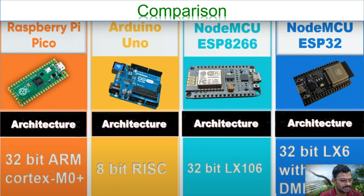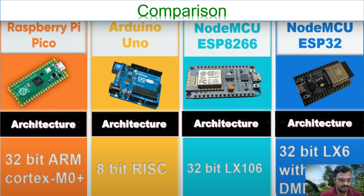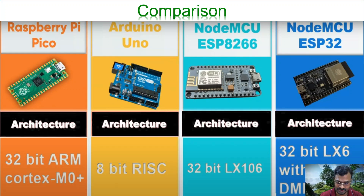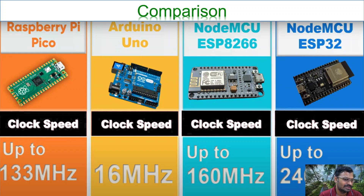In terms of architecture, the Raspberry Pi Pico uses a 32-bit ARM Cortex M0+ architecture. Arduino Uno has an 8-bit RISC processor, ESP8266 has a 32-bit LX106, and NodeMCU ESP32 has a 32-bit LX6. A larger bit size means faster processing speed and more data handling. The clock speed of the Pico is greater than Uno but a bit lesser than the other two boards, though it still far exceeds Arduino Uno and has other features to support it.